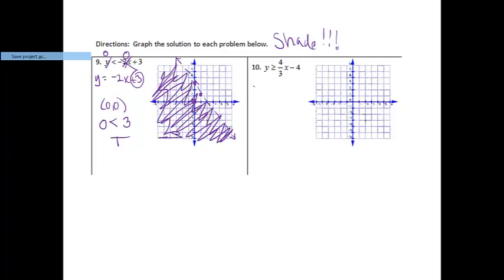Number 10. Again, we're going to start off as if we were just graphing y equals 4 thirds x minus 4. So I will start at the negative 4, down negative 4 for my y-intercept from here. My slope is 4 thirds, so I'm going to go up 4 over 3. This time there is an equal sign in my inequality, which means I get to include the line in my solution. So it's going to be a solid line.